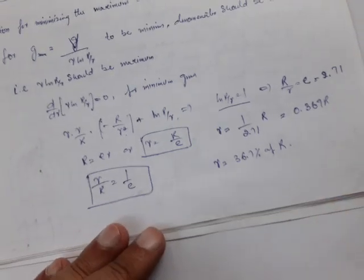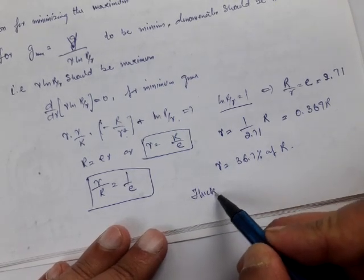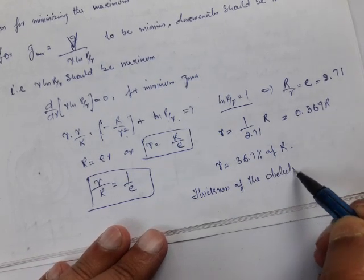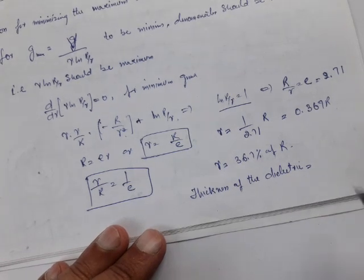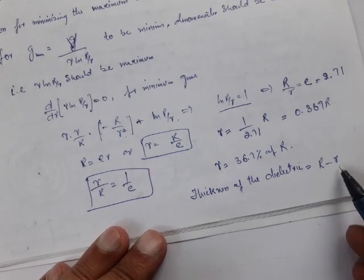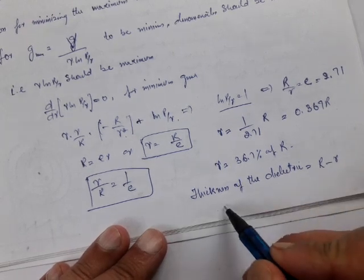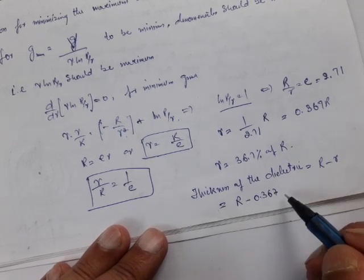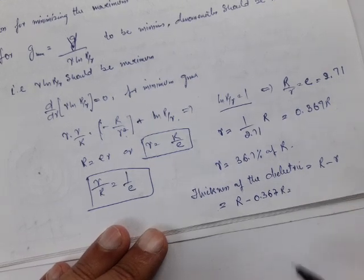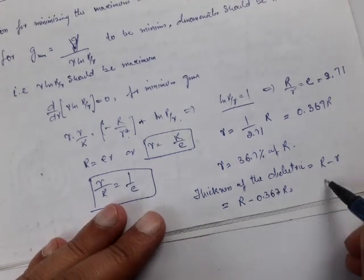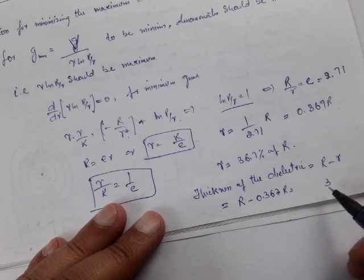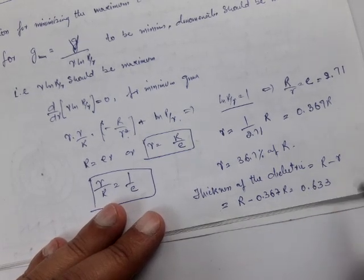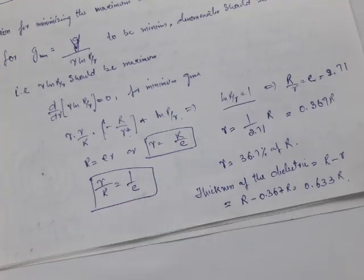From this we can find the thickness of the dielectric. The thickness equals R minus r, which is R minus 0.367R, giving a thickness of 0.633R.